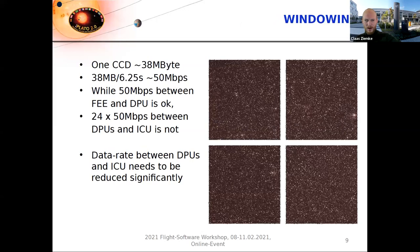One CCD is around 38 megabytes, and 38 megabytes every 6.25 seconds results in a data rate of roughly 50 megabits per second. This, in a 100 megabit SpaceWire link, is okay — but you'll still remember that we have only 5.15 megabits per second in total for the whole payload as a downlink. So clearly there has to be some data reduction going on here.